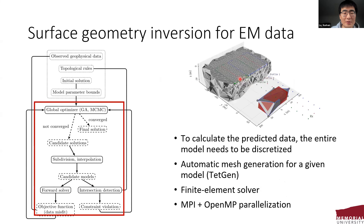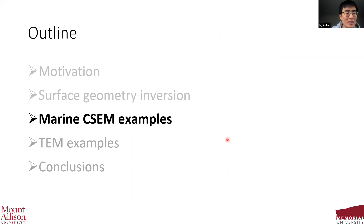For EM problems specifically, you not only need to discretize the anomalous region but also the entire model domain to calculate forward responses. For each model in the GA population, we automatically generate a mesh using TetGen, calculate forward modeling responses using our finite element solver, and all models in the GA population can be evaluated in parallel. We implemented MPI and OpenMP parallelization to speed things up.